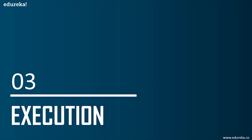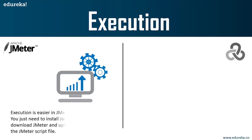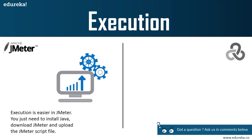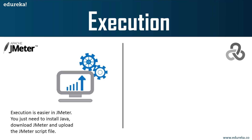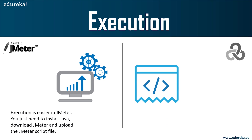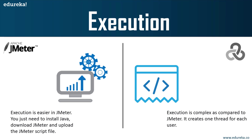The next parameter is execution. Execution is easier in JMeter — you just need to install Java, download JMeter, and upload the JMeter script file. You can manually set up load generators for small loads, or upload your JMX file in BlazeMeter, selecting duration, number of iterations, monitors, and location for larger loads. LoadRunner execution is more complex by comparison — it creates one thread for each user, and the load on the server is emulated by instructing multiple virtual users to perform tasks simultaneously, requiring scenario configuration and scheduling before testing.